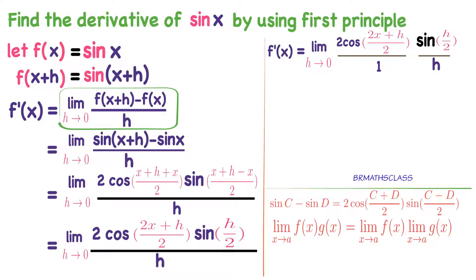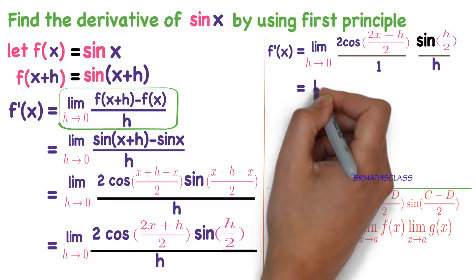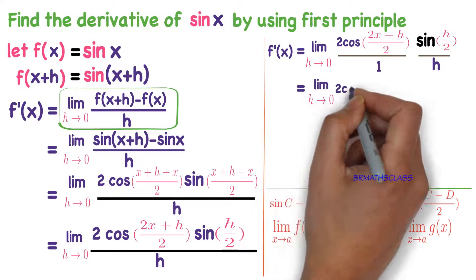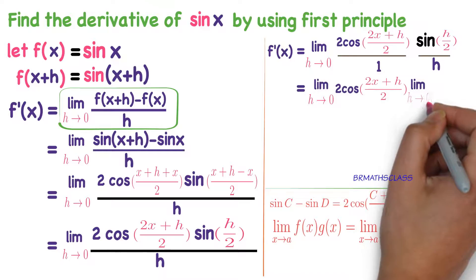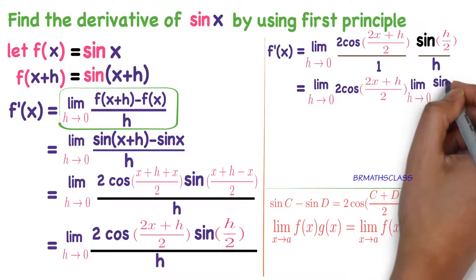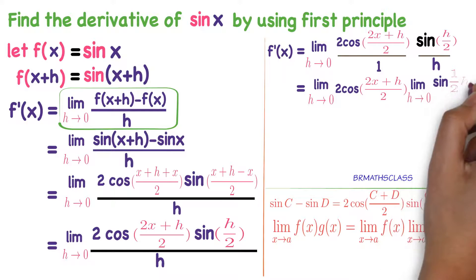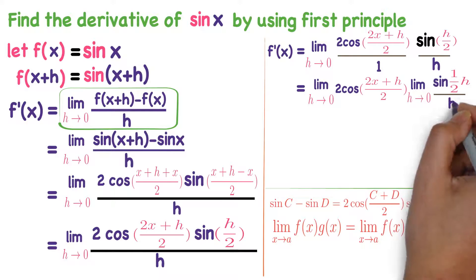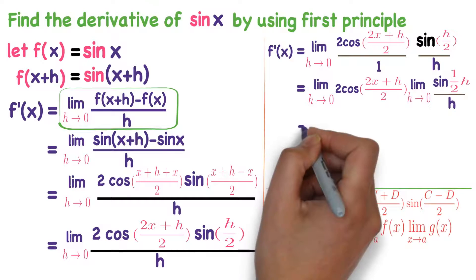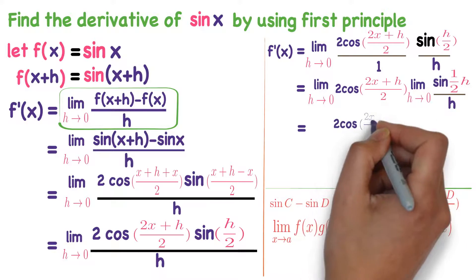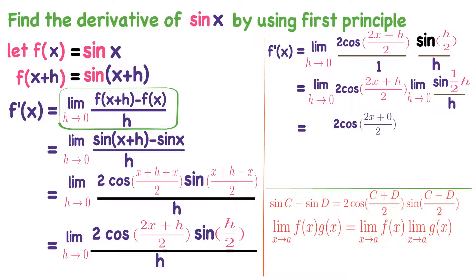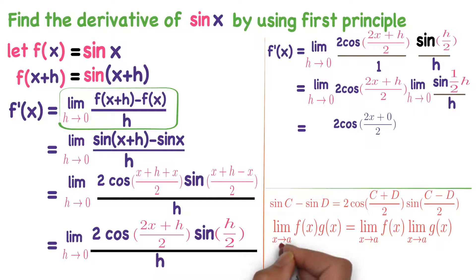Observe: limit h tends to 0 of 2 cos((2x+h)/2), times limit h tends to 0 of sin(h/2) divided by h. When we apply the limit to the cosine part, it becomes 2 cos((2x+0)/2), which gives 2 cos x.